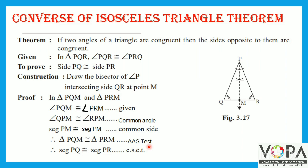Therefore, segment PQ is congruent to segment PR, which is a corresponding side of congruent triangles.